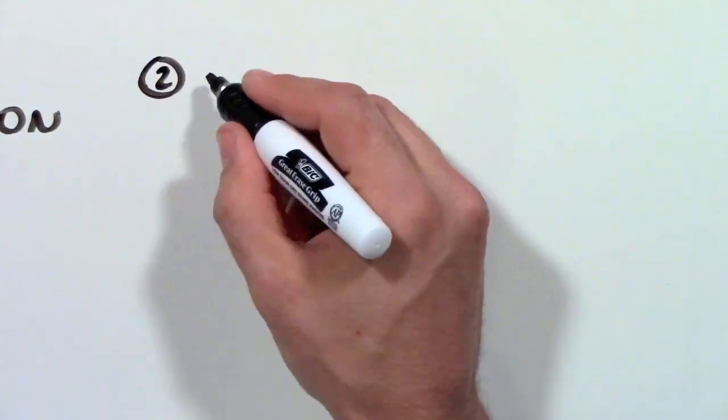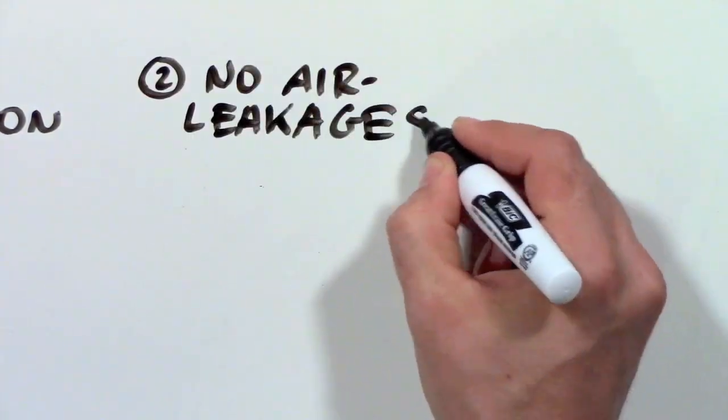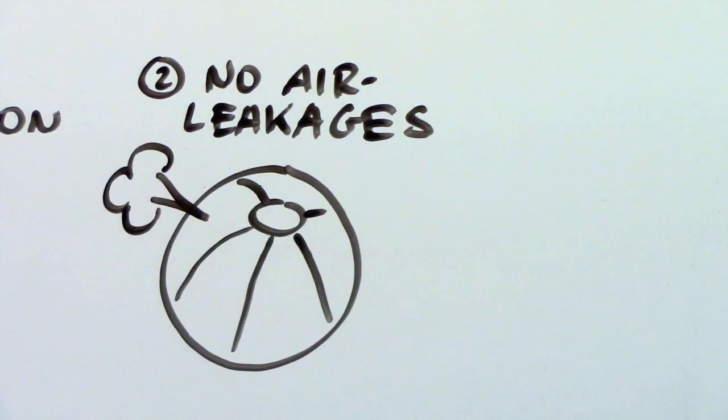No air leakages. There should be no holes small or large to let warm air out of the house.